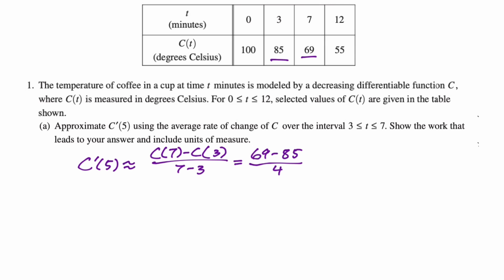And then this is actually a calculator question. So if you want, you could just use a calculator on this. You can also leave this the way that it is, which is probably the best move. But I, of course, use the calculator. So I got equals negative 4. And then our units, so it's the units of C, which are degrees Celsius, divided by the units of t, which are minutes. So it's going to be degrees Celsius per minute. And that's part A.